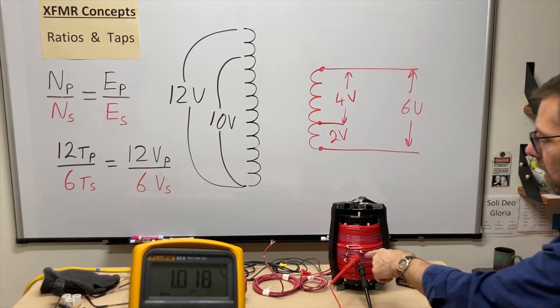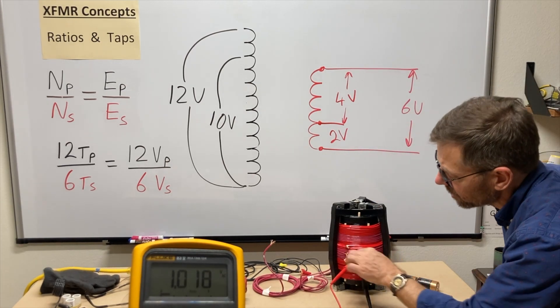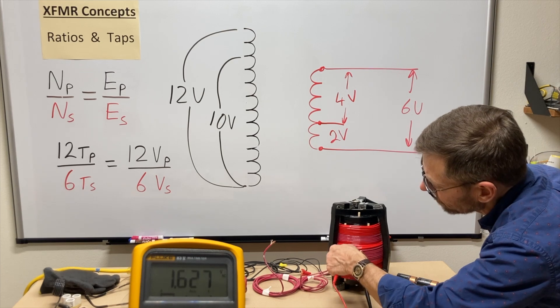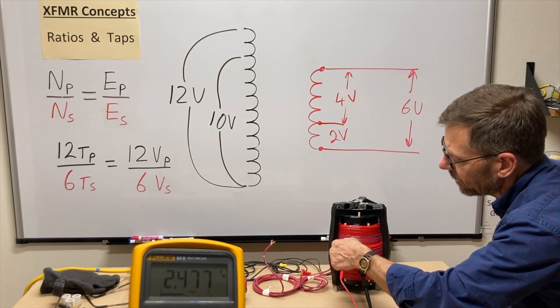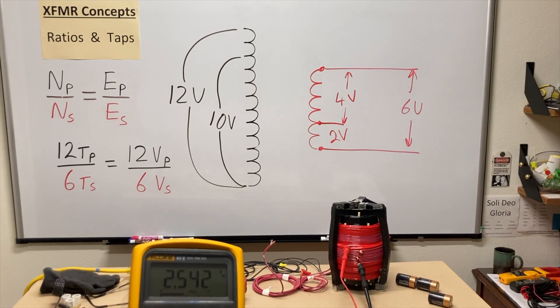One volt for four turns. Add a couple more. Should be about a volt and a half. Should be about two volts. And go up here, I've got two and a half volts. That's about, what is that, 10 turns or so. And I've got two and a half volts. Perfect.